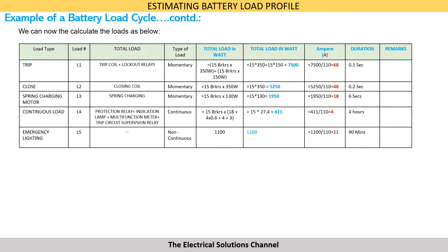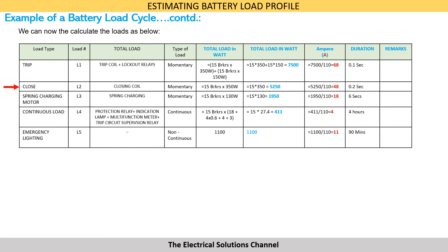The load during tripping of the breakers will be the trip coil load plus the burden of all the lockout relays. This is a momentary load, and the total load during tripping in our example works out as 7,500 watts, giving approximately 68 amps during tripping. We can similarly calculate the DC loads for closing operation and spring charging conditions.